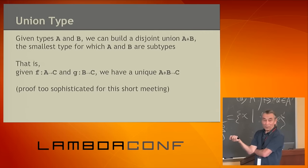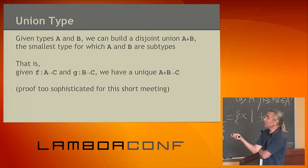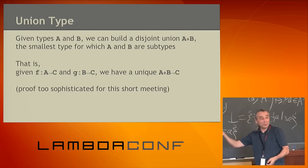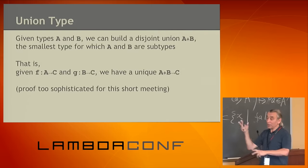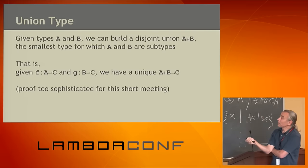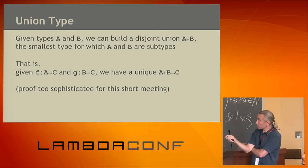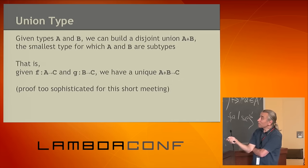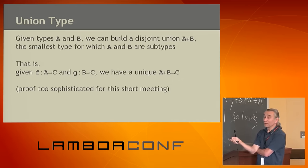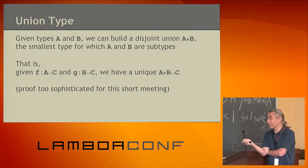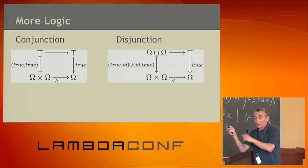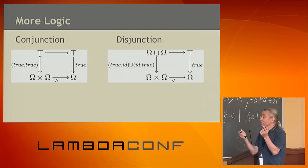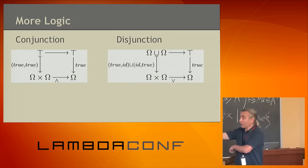Union type: it's built out of products and singletons — take those specific pairs that have only one thing there. The disjoint union is the smallest type where A and B are subtypes — that's the natural definition — and it can be built here. Having all these things, we can build a logic.